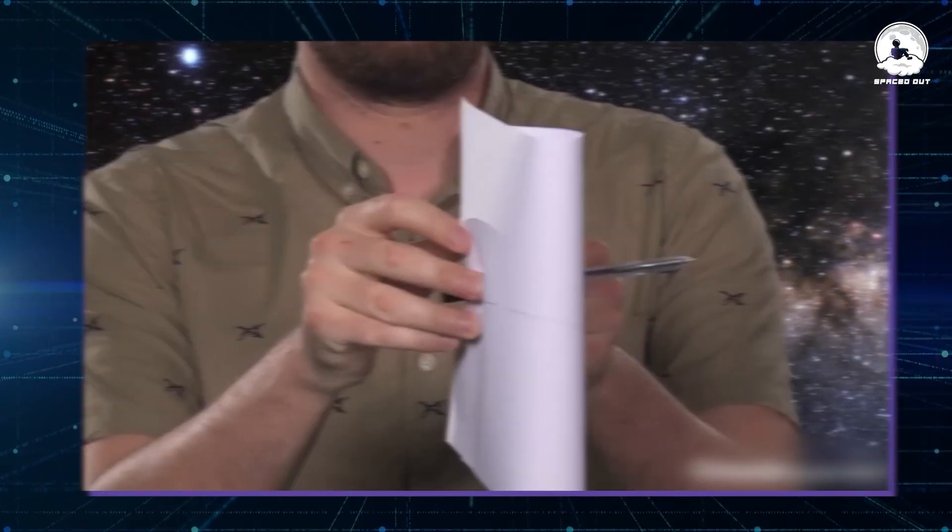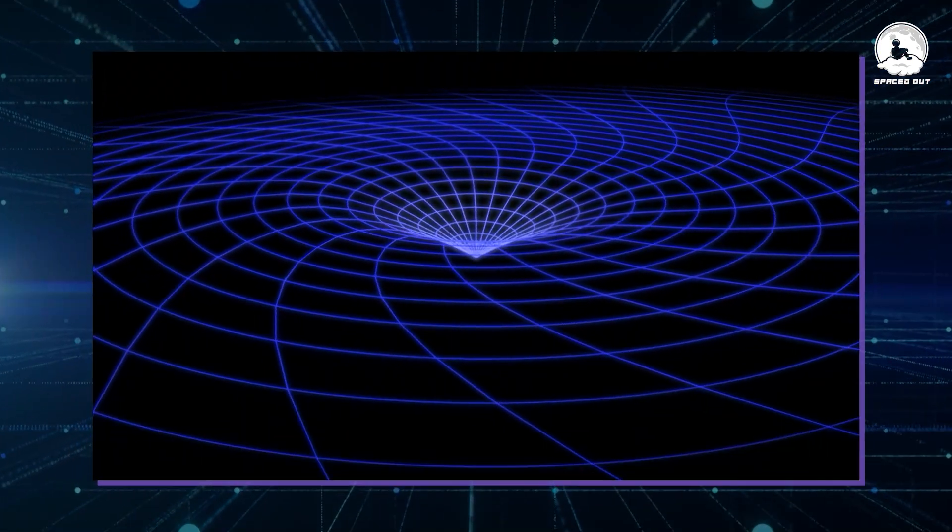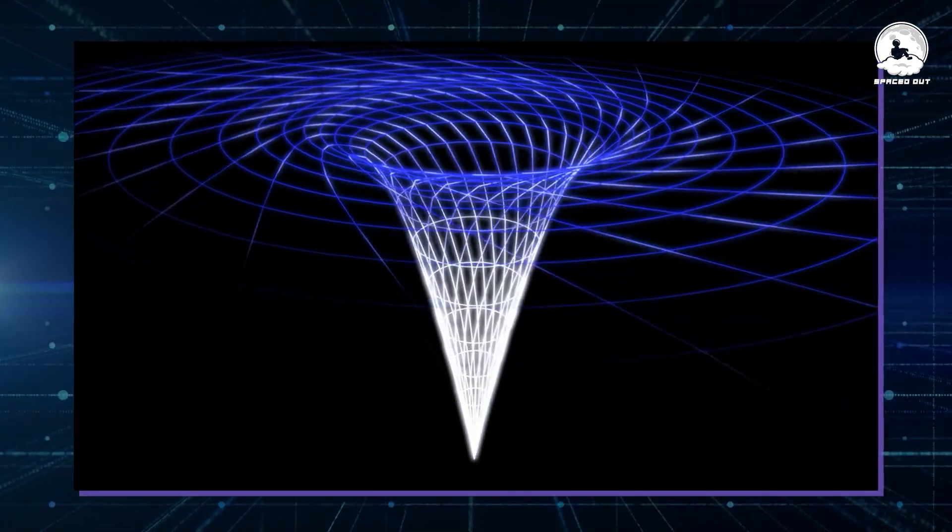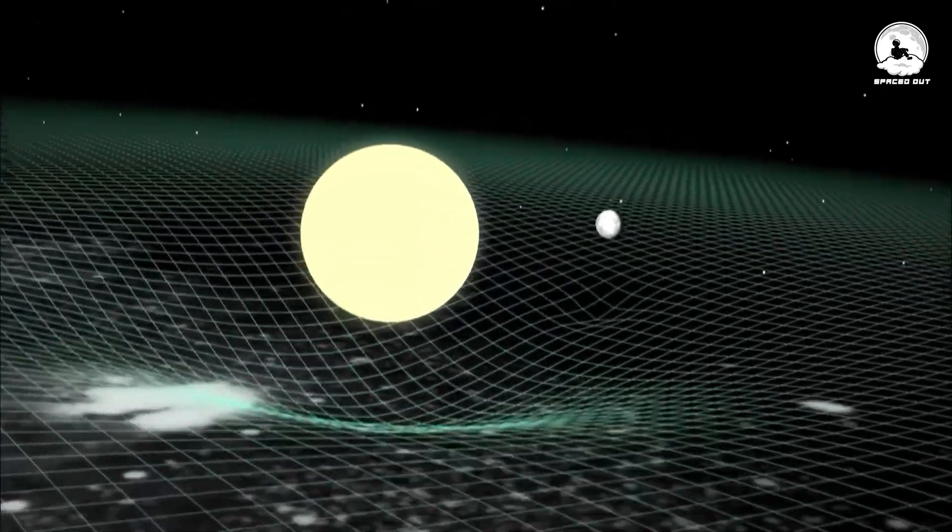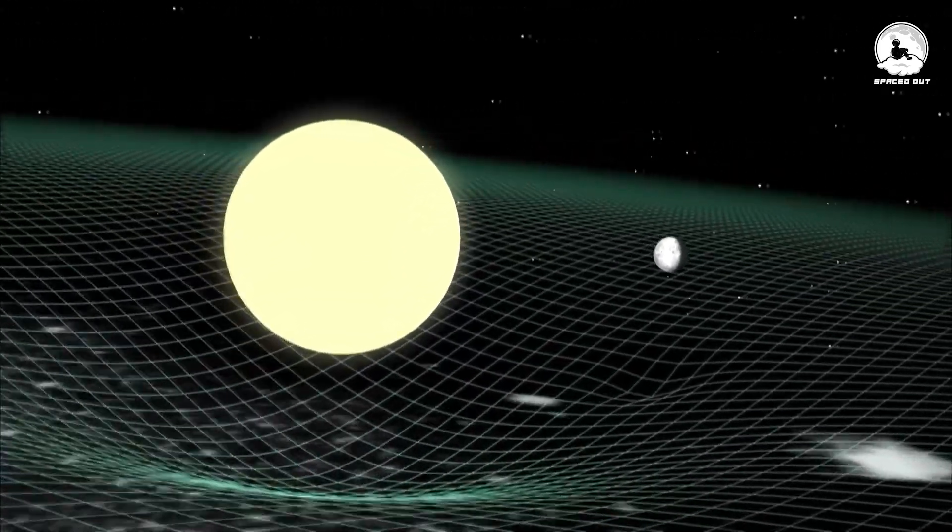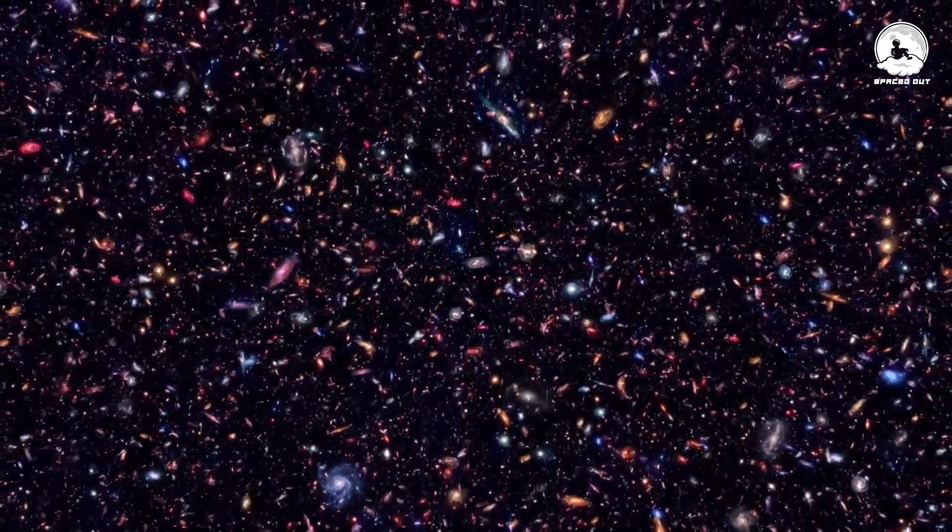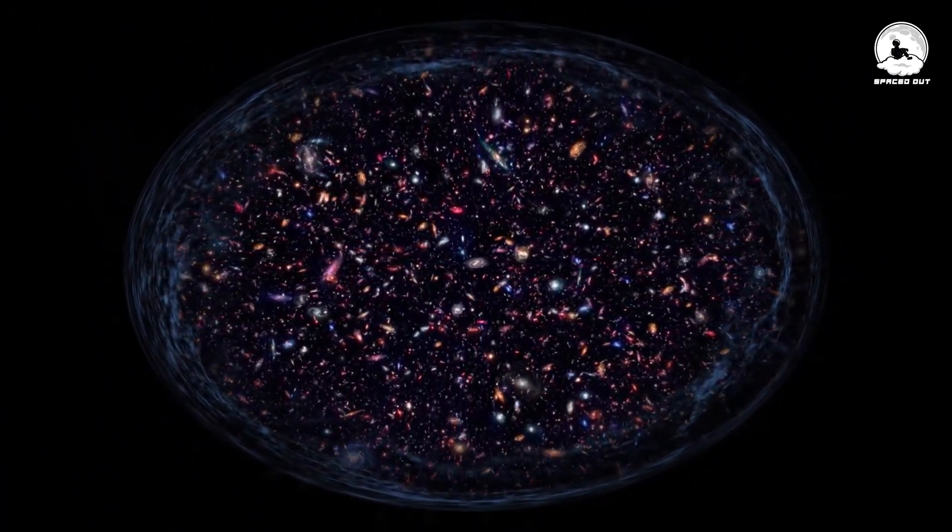However, the current reality is that we can only find wormholes on paper. The theoretical groundwork for wormholes comes from general relativity, suggesting their potential existence. But just because the equations allow for their possibility doesn't guarantee their actual presence. General relativity is a mathematical framework, with various solutions, but not all mathematical outcomes align with the reality we observe.